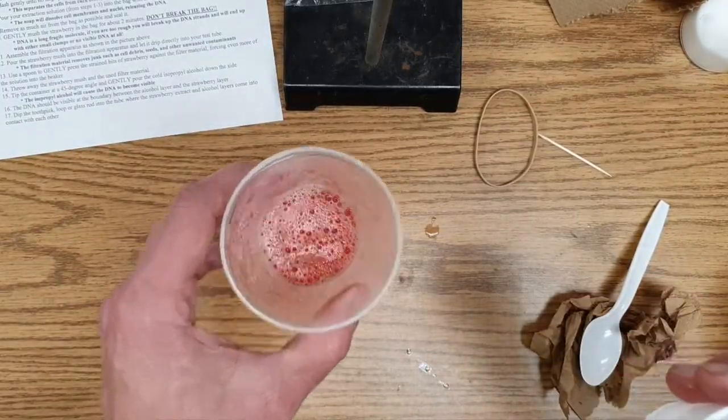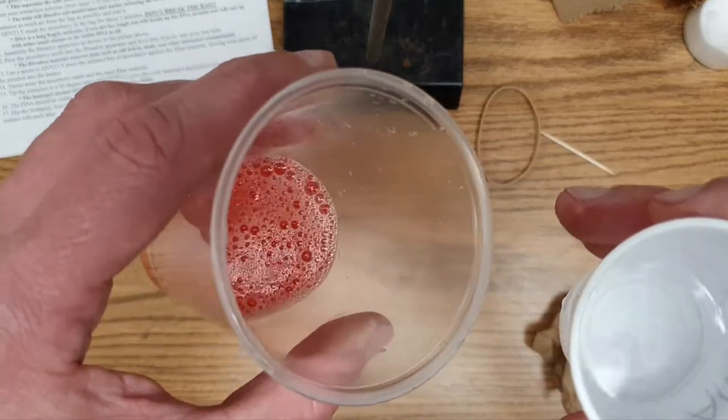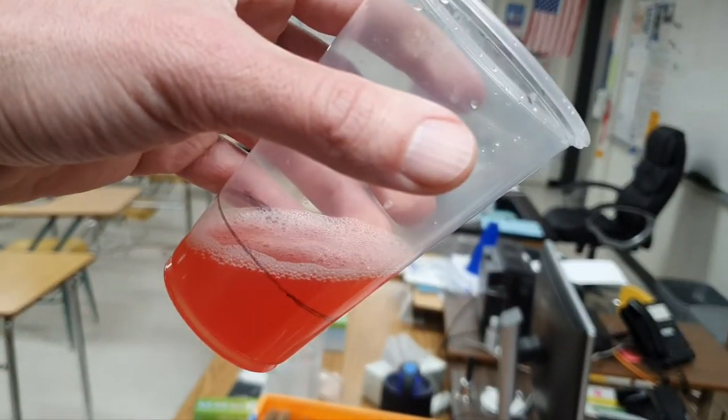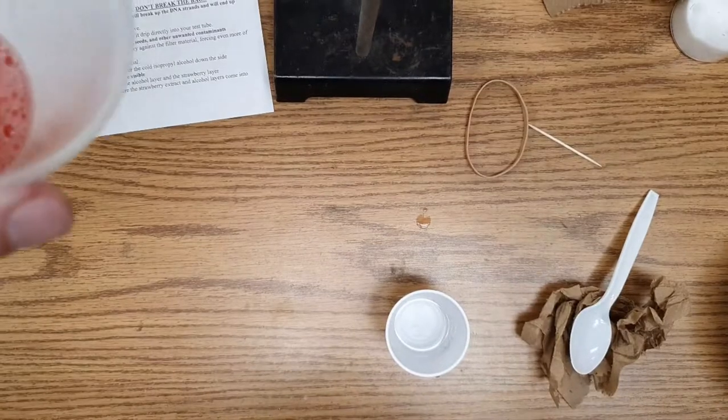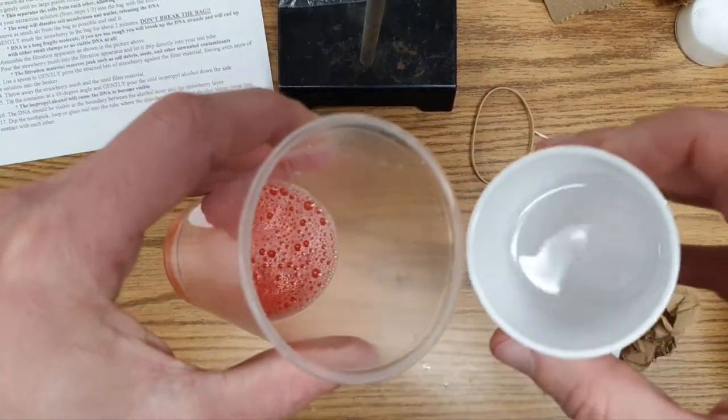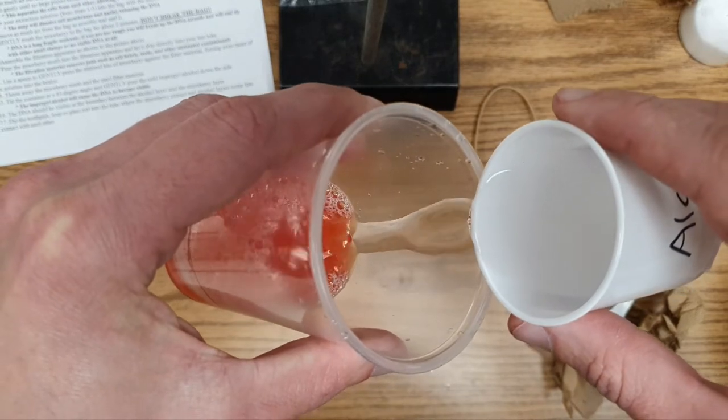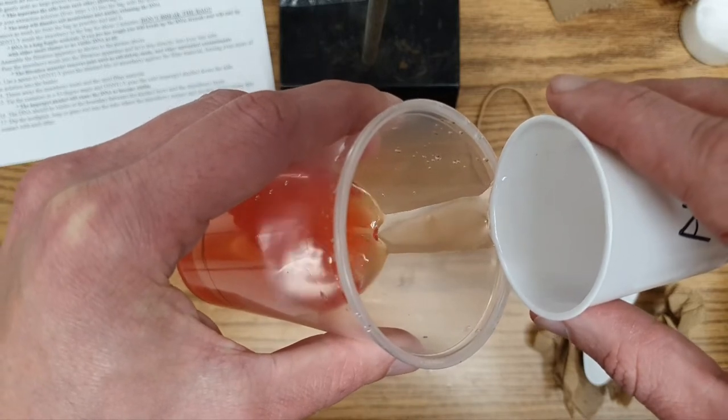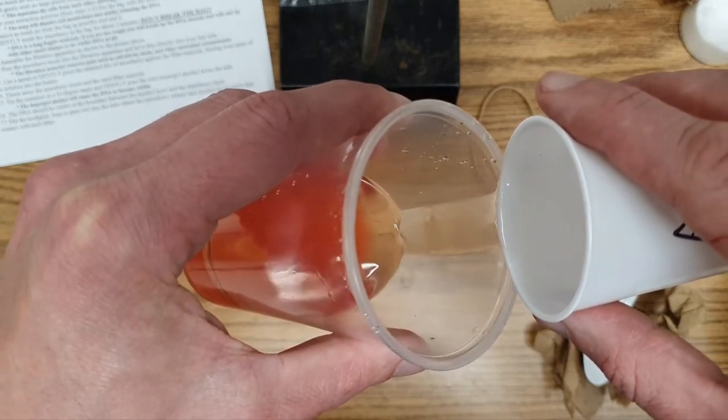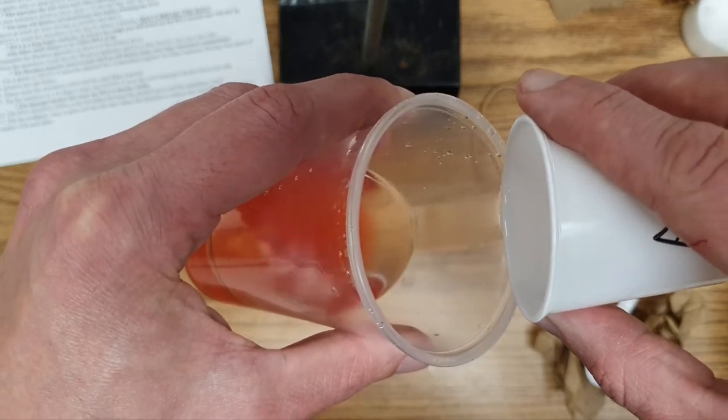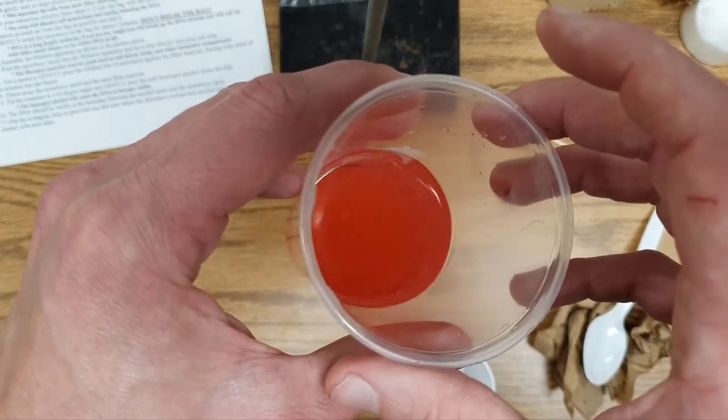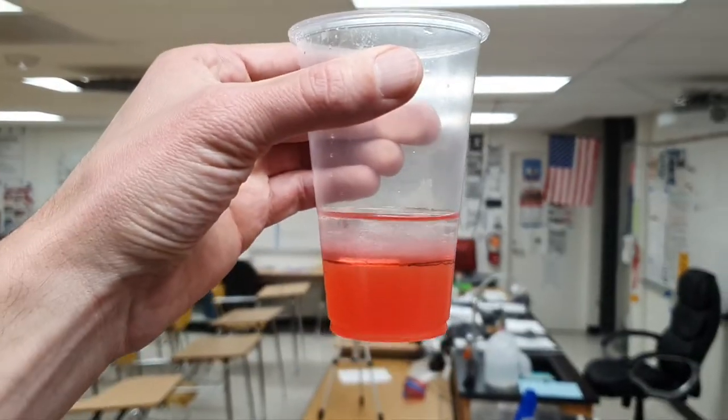Now you're going to pour this into here, but not direct. Tilt it sideways. 45 degree angle. Like this. That's a roughly 45 degree angle. You're going to very gently let the alcohol flow down the side so that it forms a layer on top. Notice, the clear alcohol has formed a layer on top of the rest of the liquid. Hopefully that's reasonably visible.